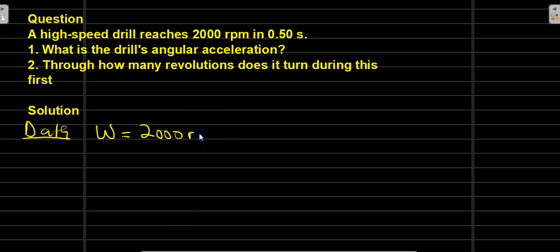This is in revolutions per minute. This revolution per minute we need to convert it to radians per second. To convert to radians per second, we need to understand that this 2000 RPM is the same as to say 2000 times 2π over 60.